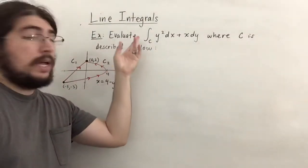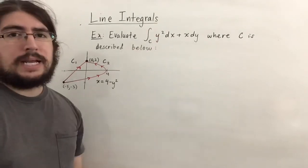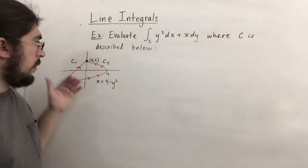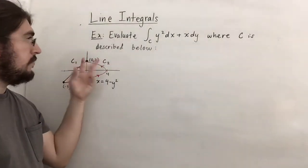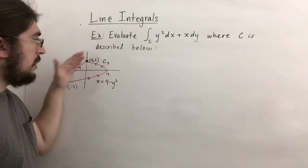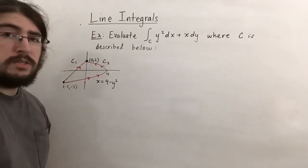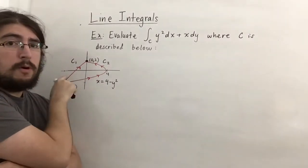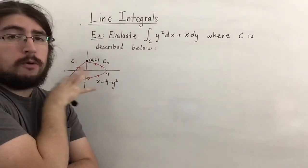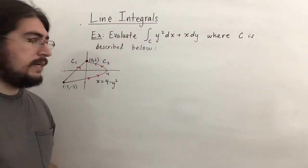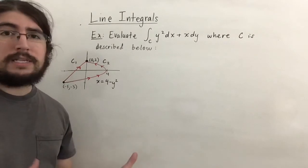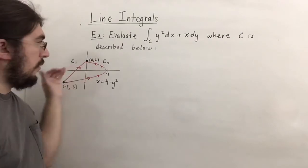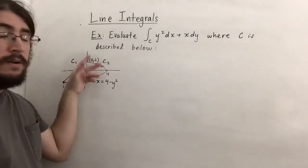For this example, we evaluate the line integral along c of y squared dx plus x dy, where c consists of two parts: c1 is the straight line from (negative 5, negative 3) to (0, 2), and c2 is the parabola x equals 4 minus y squared oriented in a particular direction. The orientation actually matters here — unlike the arc length case, with respect to x and y, direction changes the sign of the result.